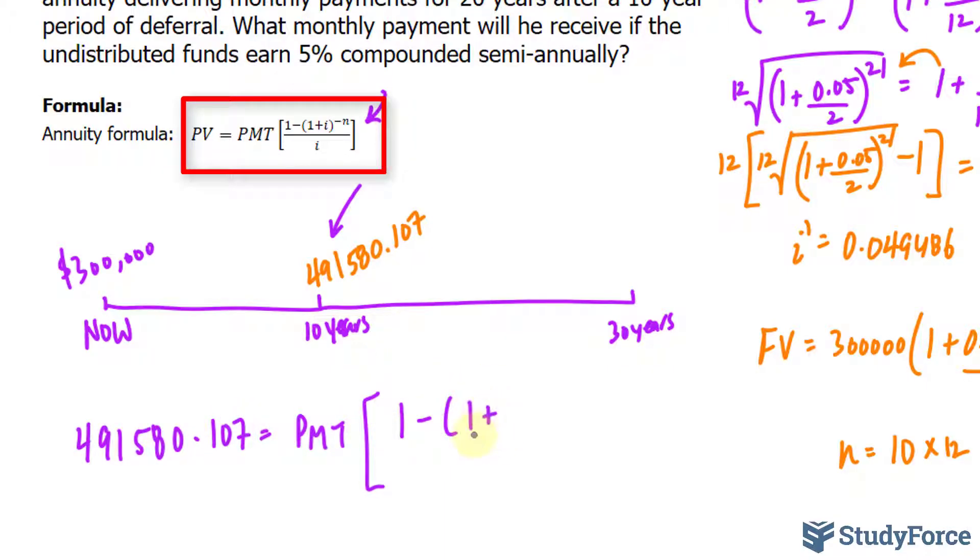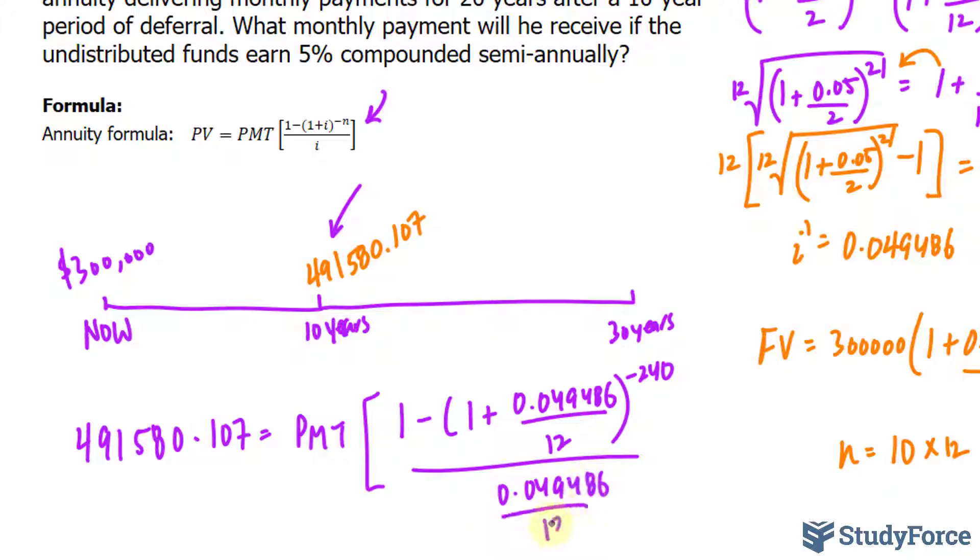1 minus 1 plus our interest rate that we found, 0.049486 divided by 12. And that's being raised to the power of negative n. The n value will be 20 times 12, because that's the span from 10 to 30. 20 times 12 makes 240. So, negative 240 over 0.049486 divided by 12. That's the denominator.